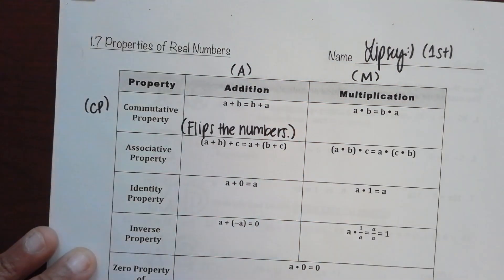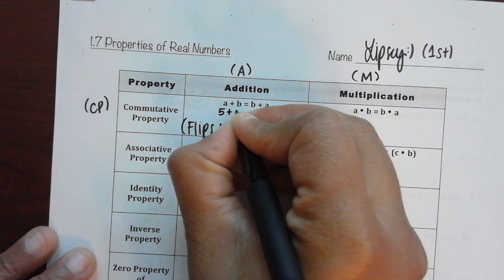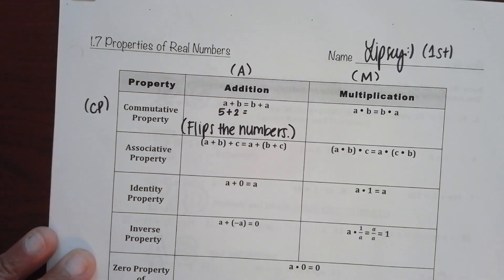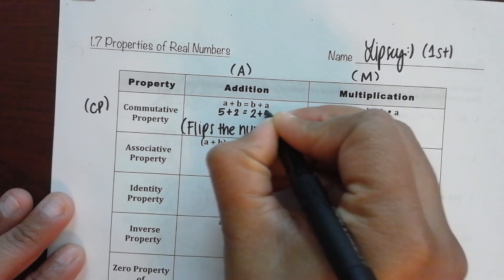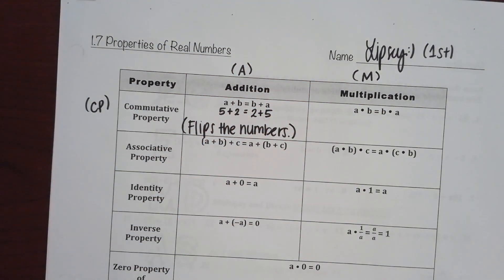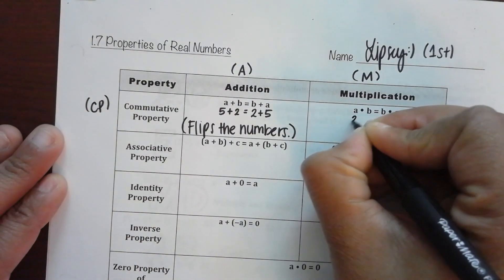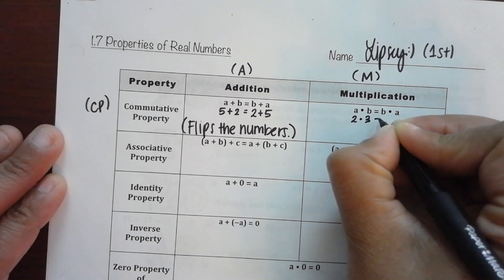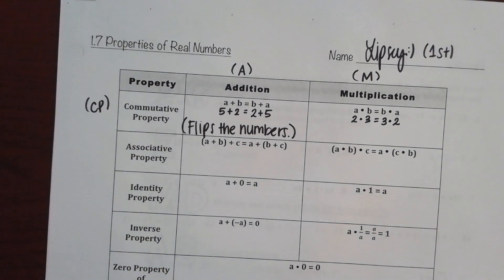Commutative — flip them — does not change the outcome. So if I gave you the example: what is five plus two? Seven. What is two plus five? Does seven still equal seven? Yes. Did the actual position of the five and two matter? No. Same with multiplication: two times three equals three times two. Does six still equal six? Yes. That's how the commutative property works.